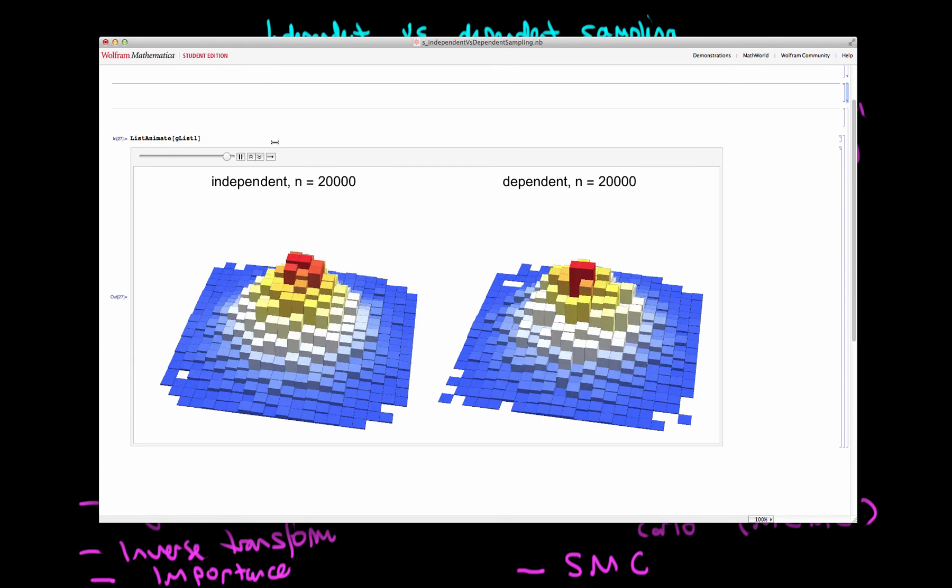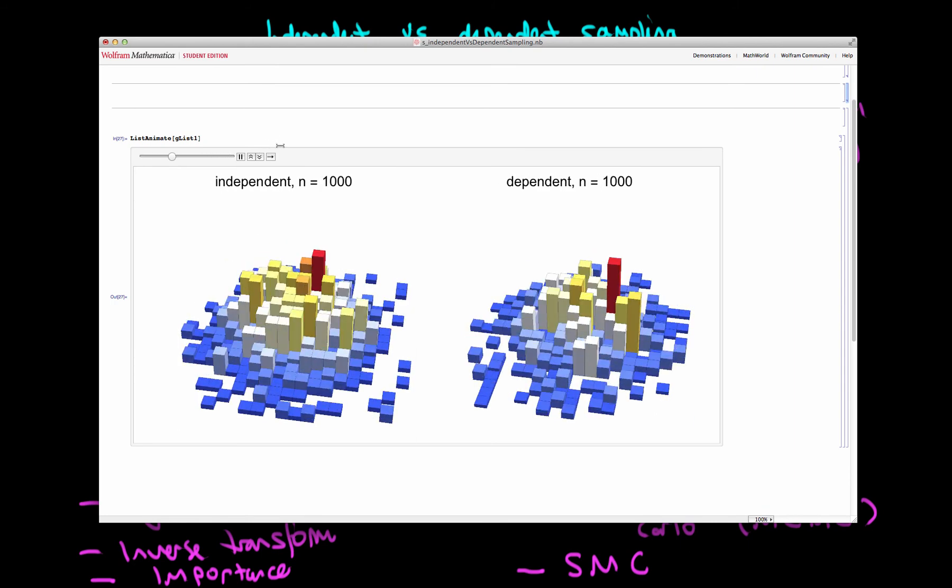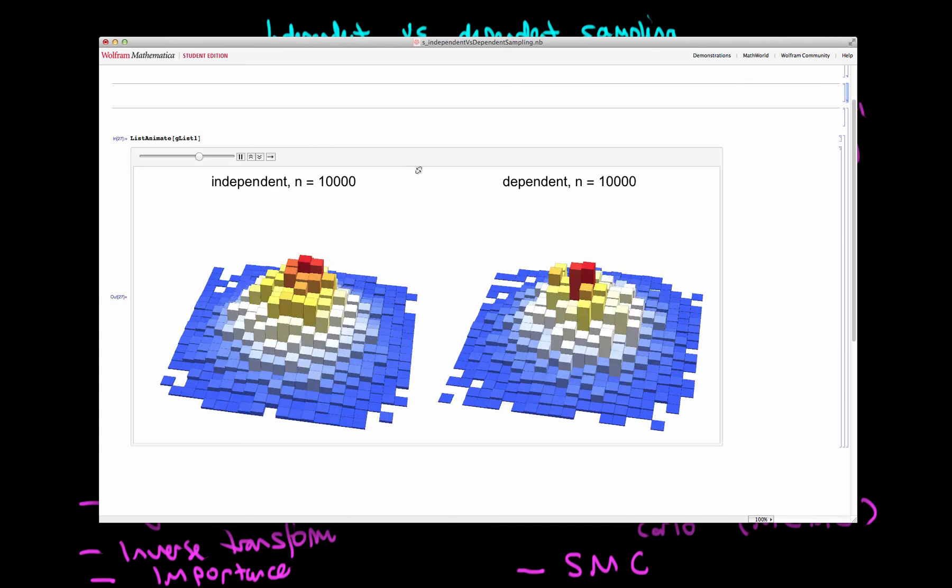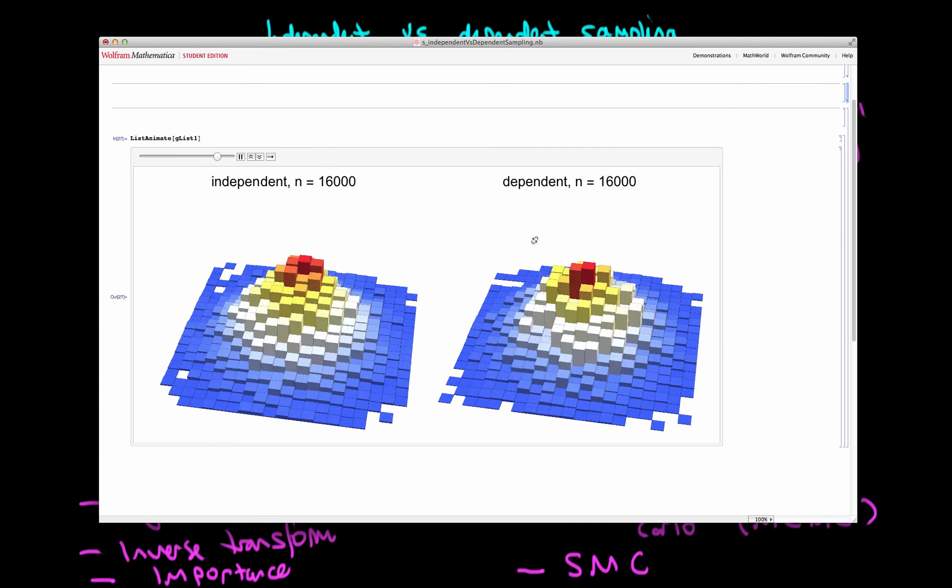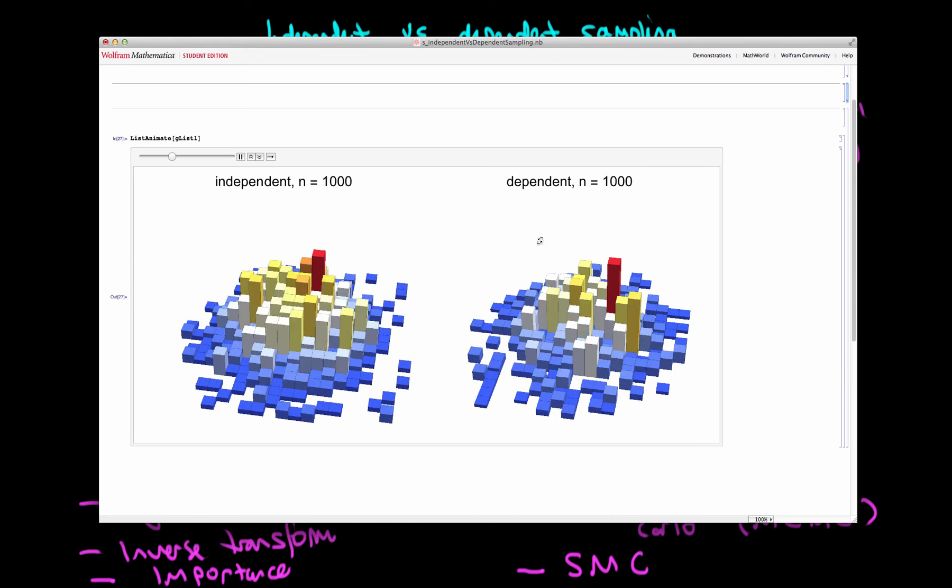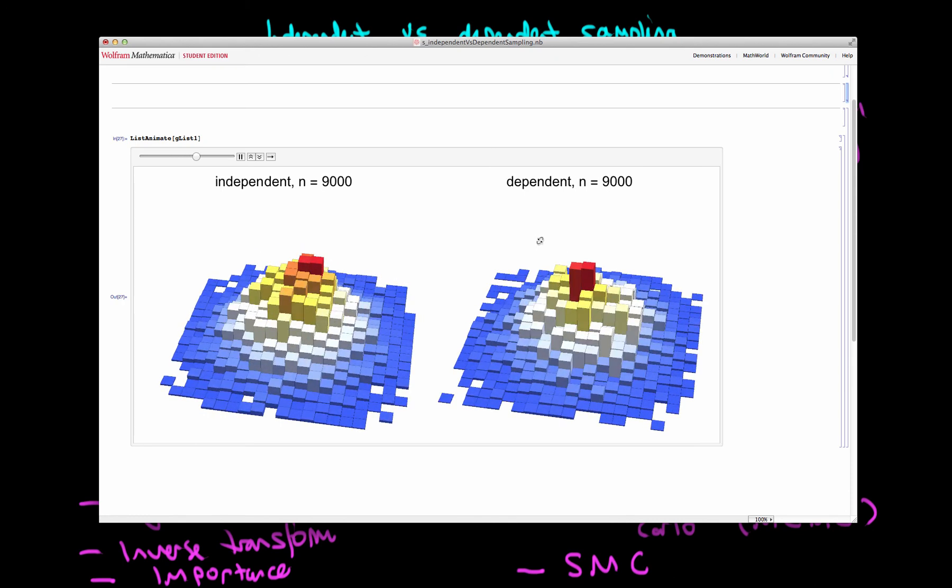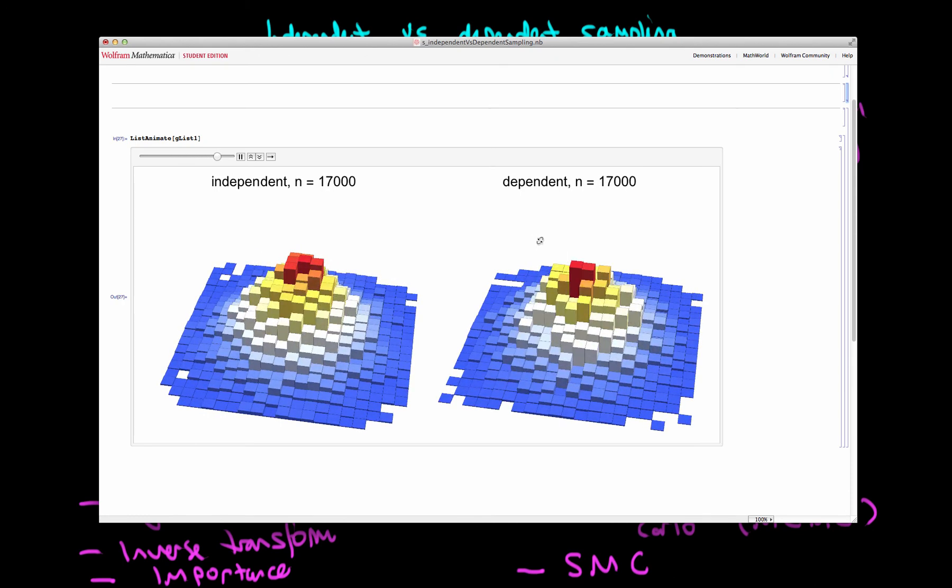What we can see here is that as I sample from both of these sampling algorithms, for an equivalent number of samples from the independent sampler, the dependent sampler distribution is that much less crisp and has that much more noise in it than does the equivalent number of samples for the independent sampler.